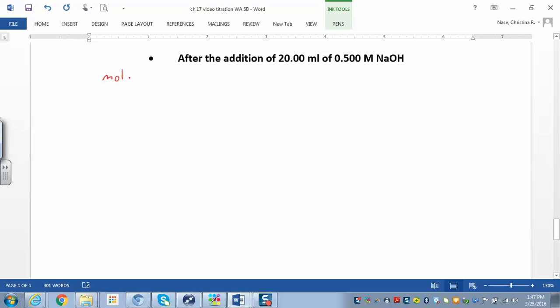So we always know the moles of the acid, that's going to be the same as what it's been because we didn't add any acid. And we'll find the moles of our strong base. We're adding a 0.5 molar solution, and we added 20 mls, so that's 0.020 liters, which gives us 0.010 moles.